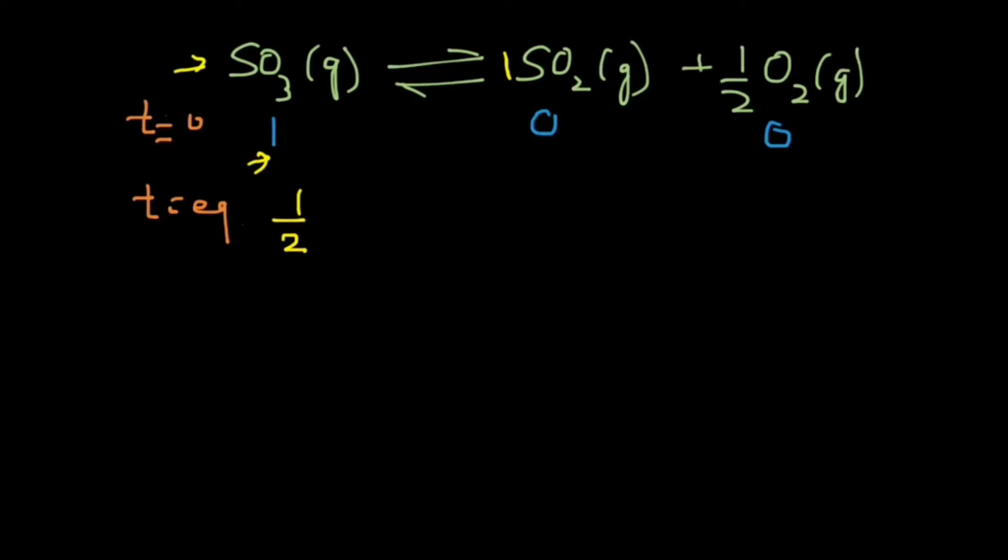So we used up half mole of SO3, and we will get half mole of SO2, and 1 by 2 into half mole of oxygen that gives us 1 upon 4.